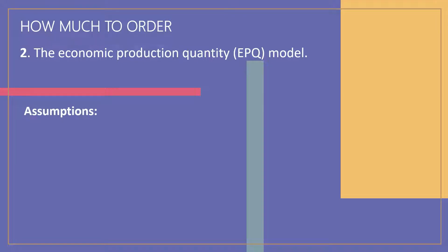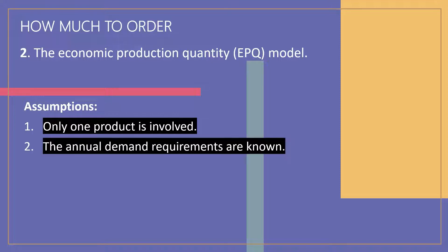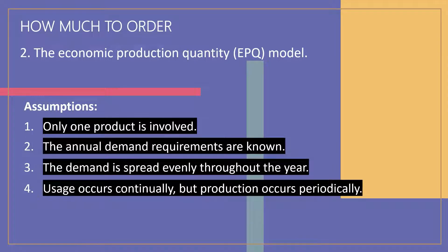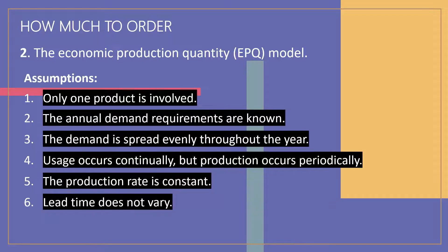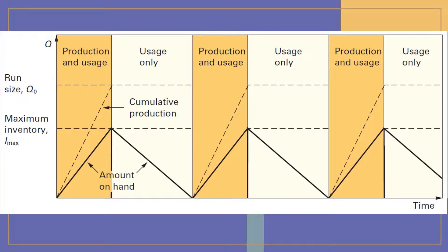The assumptions of the EPQ model are: only one product is involved; the annual demand requirements are known; the usage rate is constant; the usage occurs continually but production occurs periodically; the production rate is constant; lead time does not vary; and there are no quantity discounts.